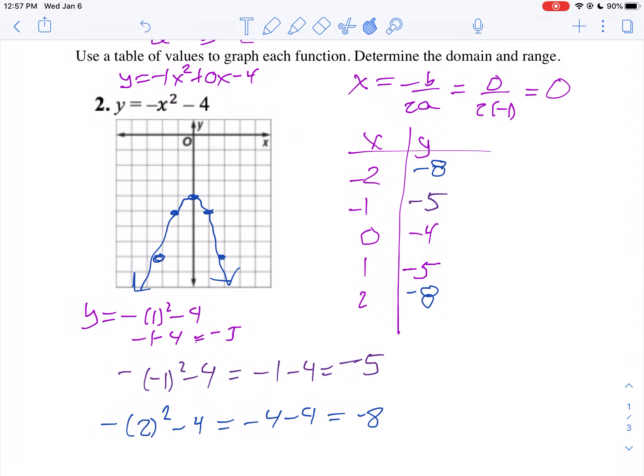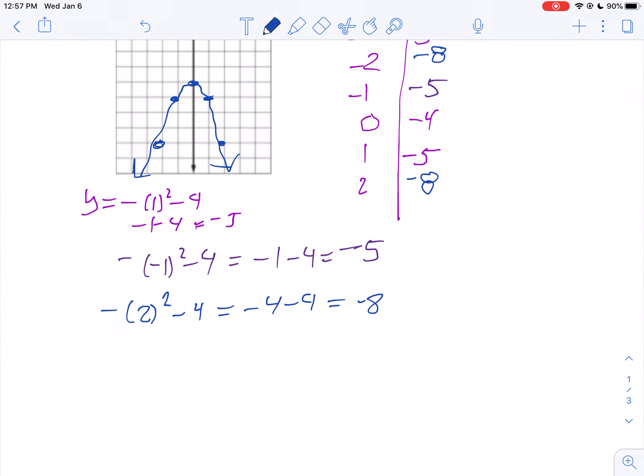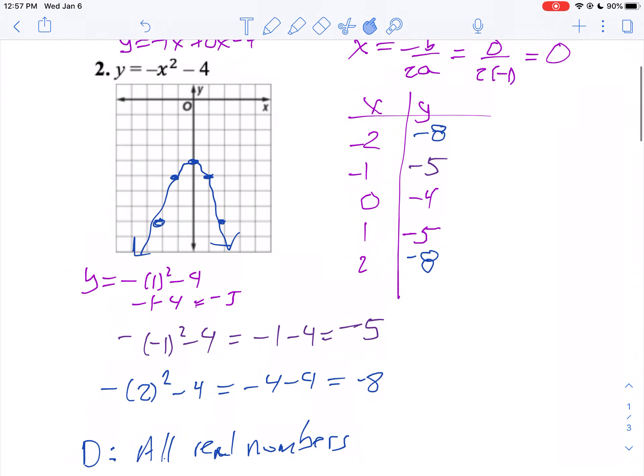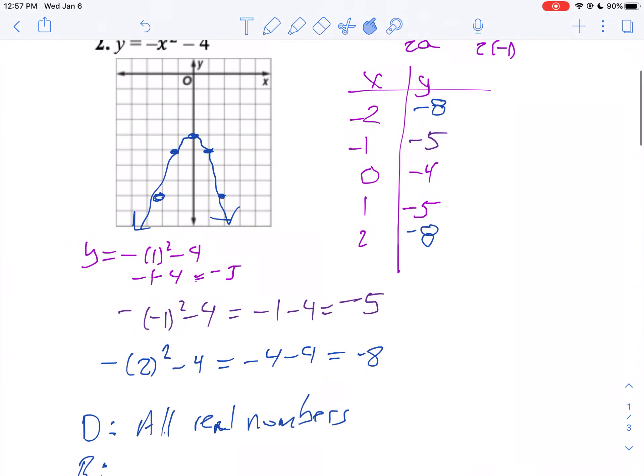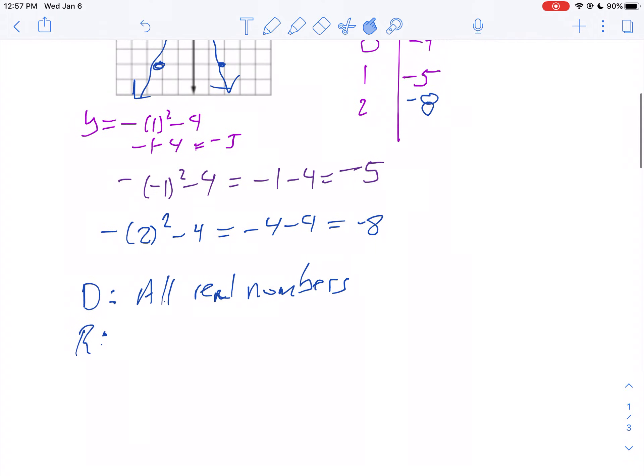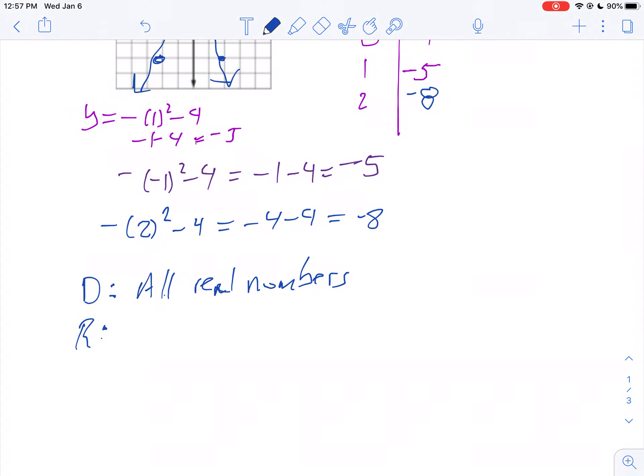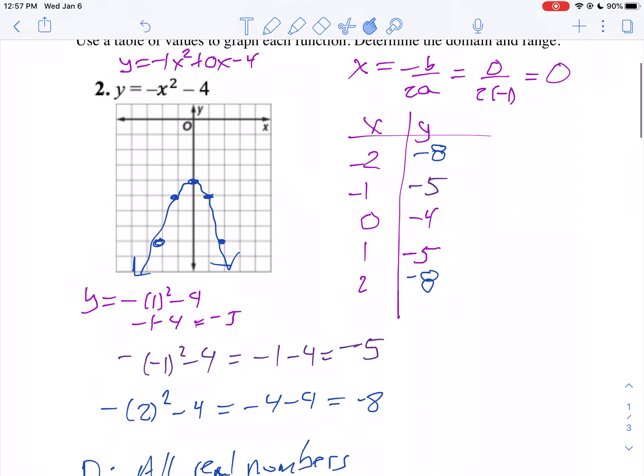And then I can draw my parabola. And then we're supposed to state the domain and the range. Well, for any parabola, your domain is always all real numbers, because no matter what number I put in for x, I could get an answer. My range is a little bit different. Notice this is a sad parabola because it's going down. It starts at negative 4 and goes down. So I'm going to say y has to be less than or equal to negative 4. That's our range. And that's what you would do for problem number 2 on the first page.